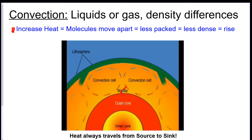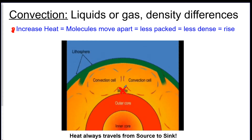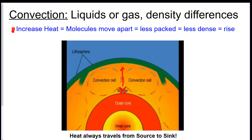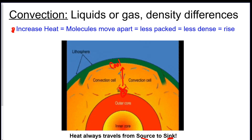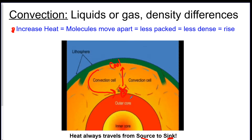This is apparent in this picture: the outer core is hot, it heats up the materials so they become further apart, less packed, less dense, and they rise. Then as the material moves away from that heat source — remember, energy travels from the source to the sink — it gets cooler. The opposite happens: molecules get closer together, more packed, more dense, and it sinks back down to the source. The cycle repeats — this is called a convection current.